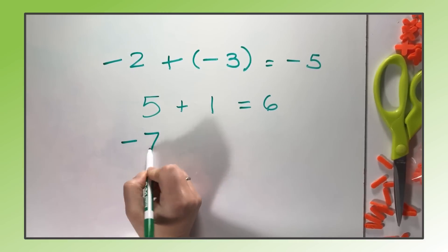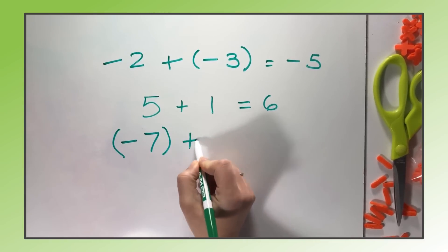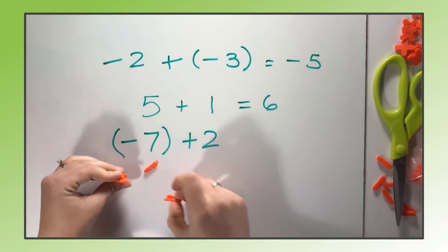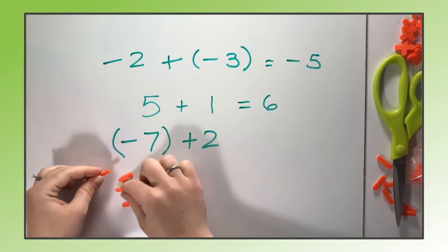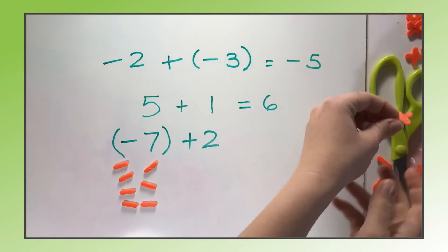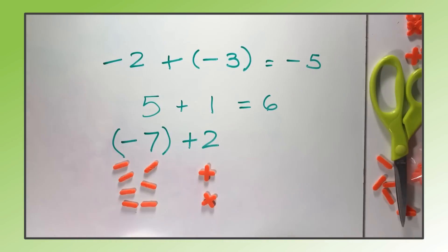Try something like negative seven plus two, and they're going to see how the zero pairs actually work. You're going to want to do a couple like this before you send them off on their own, so they can see how they're going to use the zero pairs. With negative seven, they would need seven minus signs, and then they're adding a positive two. So now they have some of each sign.